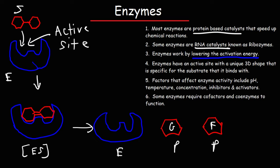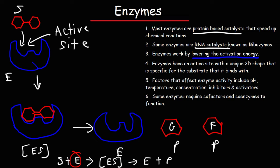The enzyme is a catalyst that is not used up in the reaction. Writing the overall reaction: S plus E forms E-S, the enzyme-substrate complex, which is the intermediate. Then it becomes E plus P, where P is the products. Notice that the enzyme appears at the beginning and at the end of the reaction — it's not consumed. It can be reused to react with another sucrose molecule, converting it into glucose and fructose. So enzymes speed up chemical reactions but are not consumed in the reaction.